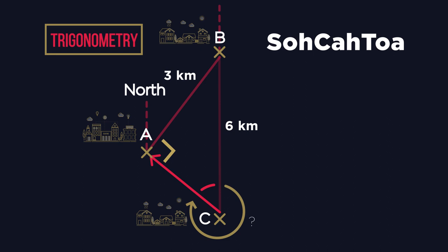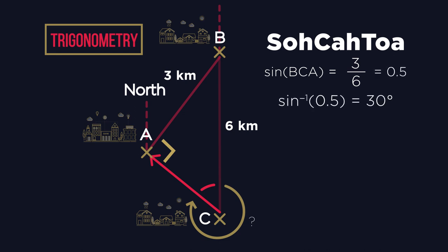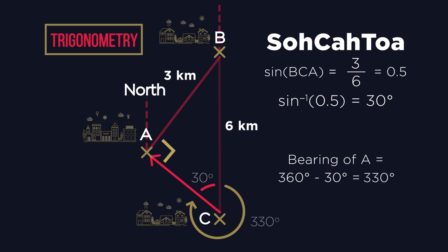We can see the opposite length is three kilometres, whilst the hypotenuse is six kilometres. As sin BCA equals opposite over hypotenuse, or three divided by six, this gives us 0.5. The inverse of sin of 0.5 gives us an angle of 30 degrees. To find the actual bearing of A, we then subtract this from 360, giving us an answer of 330 degrees.